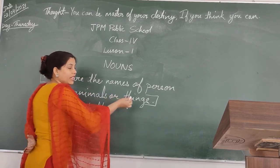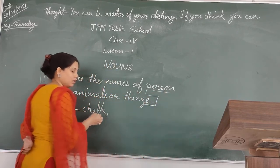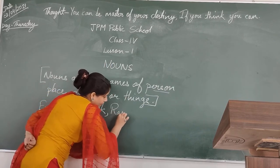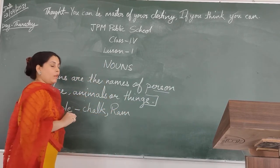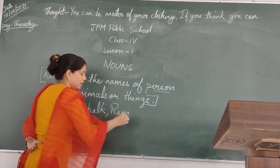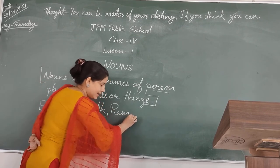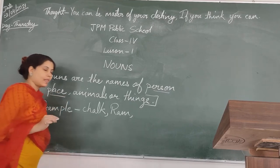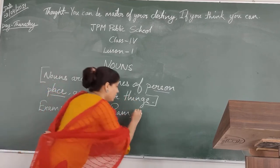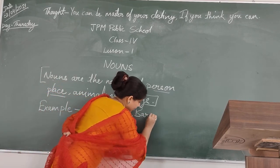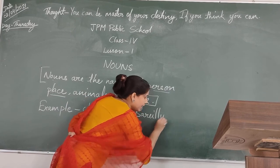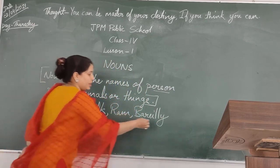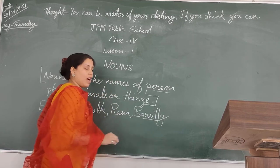Now give an example of a person. Ram. Ram is the name of a person, so it is also a noun. Now give an example of a place. Bareilly. Bareilly is the name of a city, so Bareilly is also a noun.